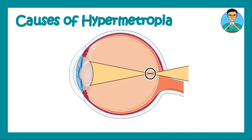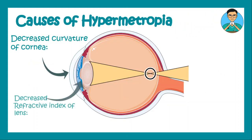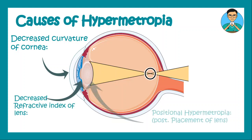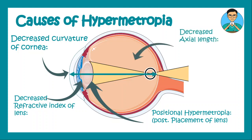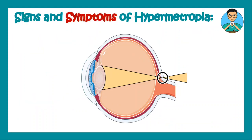The causes that lead to hypermetropia include decreased curvature of the cornea, decreased refractive index of the lens, positional hypermetropia — that is, posterior placement of the lens — or decreased axial length of the eyeball.